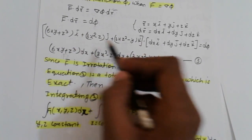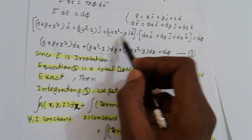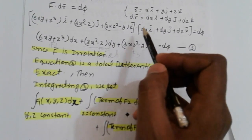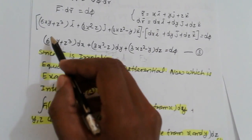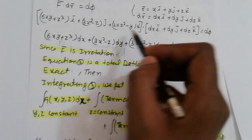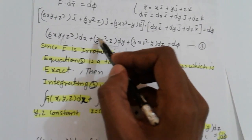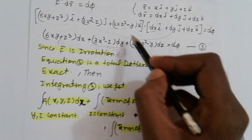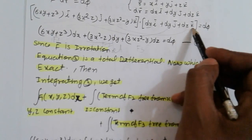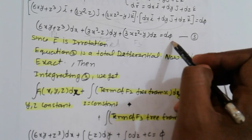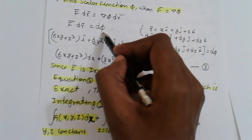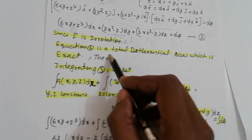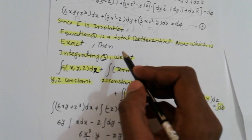Since i·i = j·j = k·k = 1 and cross terms like i·j = 0, simplifying the dot product gives: (6xy + z³)dx + (3x² - z)dy + (3xz² - y)dz = d phi. Since F is irrotational, equation 3 is a total exact differential.